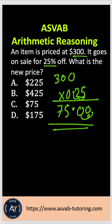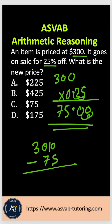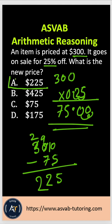Now you have to subtract $75 from $300. 300 minus 75: 10 minus 5 is 5, 9 minus 7 is 2. So that gives you $225, and the correct answer is option A.